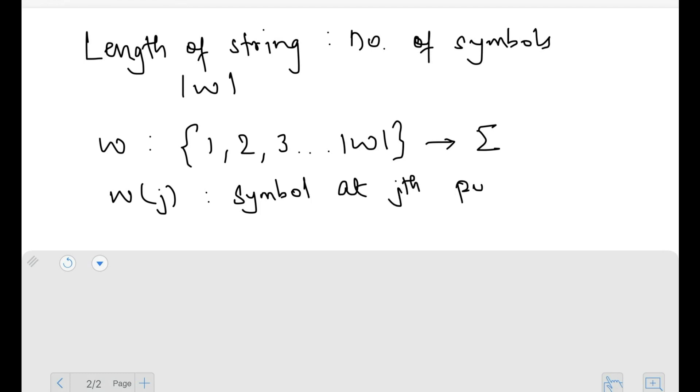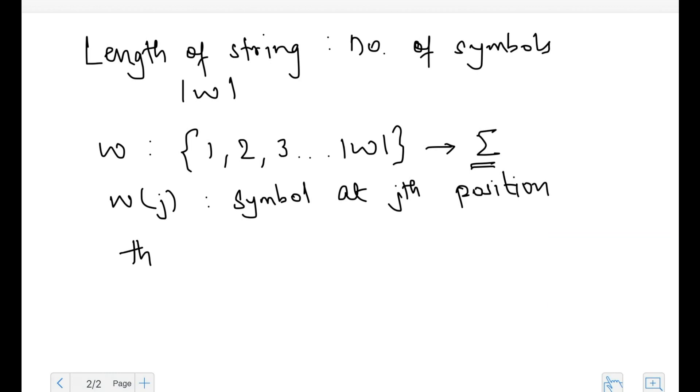And that symbol is of course going to be something from sigma. So let's say I have the string 'theory'. So in this case w of 1 equals t, w of 2 equals h, and so on. And of course here j would go from 1, 2, and so on up to the length of w, the string itself.